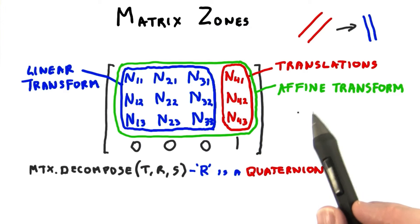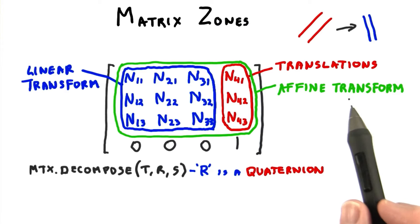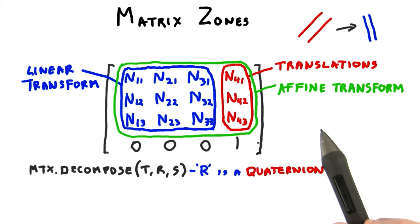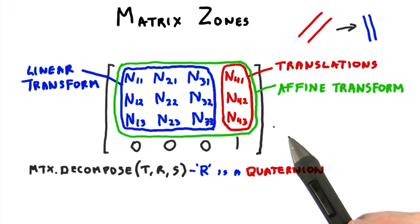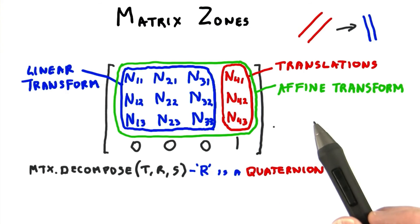In modeling, you'll essentially always use affine transforms, so we never change this last row. Since GPUs are tuned to use 4 by 4 matrices, most of us just use 4 by 4s everywhere for simplicity's sake.